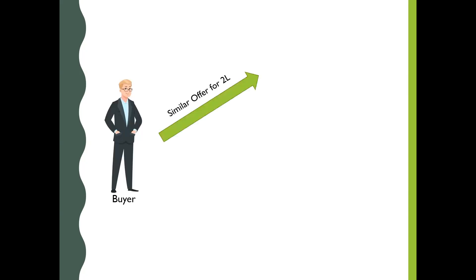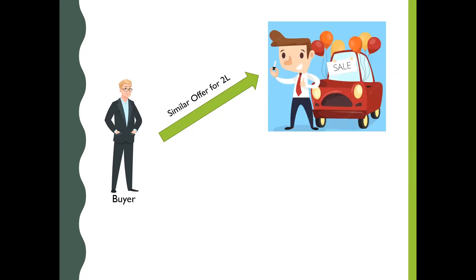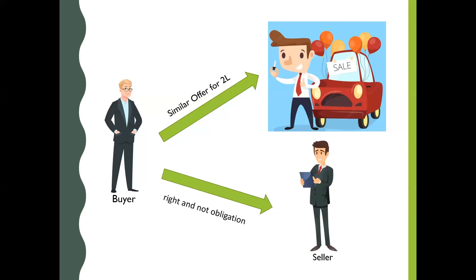Let's say you agreed to buy on the last day of the set 3 months, and on that day you came across a similar car costing somewhere around 2 lakhs, and you decided not to buy the car from your friend but from the new seller. Here, your friend cannot force you to buy from him since you have a right and not an obligation to buy from your friend. However, you would lose the 30,000 rupees when you decide not to buy from your friend, and that would be the maximum loss that you would incur.